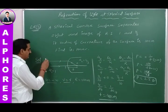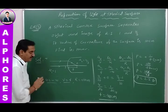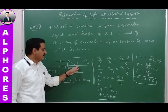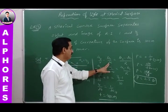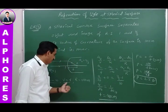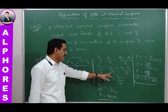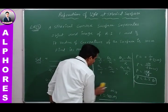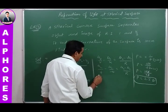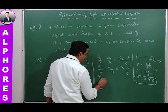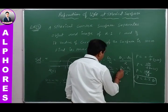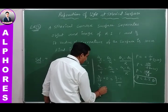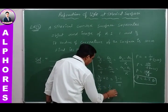Since the image distance V equals focal length F, and the object is at infinity (U = −∞), we apply the refraction formula: μ₂/V − μ₁/U = (μ₂ − μ₁)/R. Substituting μ₂ = 4/3, and simplifying, we get 4/3 divided by F equals 1/30.